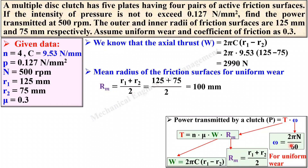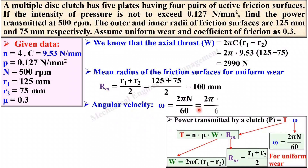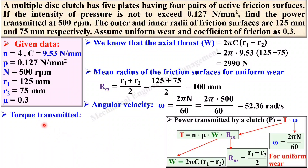Now you can find omega, the angular velocity. Put the value of N = 500 rpm into omega = 2πN / 60. Simplify it to get the angular velocity in radians per second. Now you have W and rm, so you can find the torque. Apply: torque T = n × mu × W × rm.